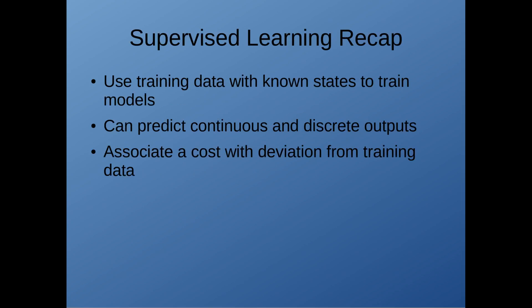To recap, when you have known training data, you should think of using supervised learning. You can use that to predict both continuous and discrete outputs, and it works by associating a cost with deviation from that training data. And then you can navigate that cost function in parameter space to find its minimum and to find the best fit to your data.